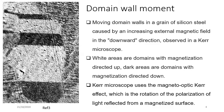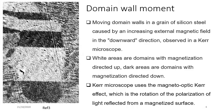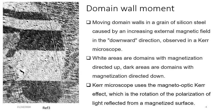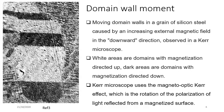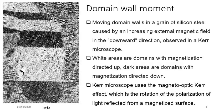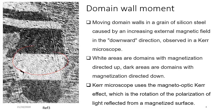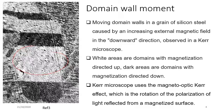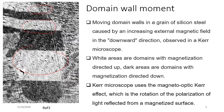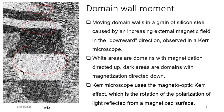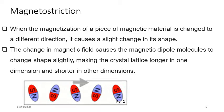The Kerr microscope uses the magneto-optical Kerr effect — the rotation of polarization of light reflected from a magnetized surface. Light areas are domains with magnetization directed up; dark areas are domains with magnetization directed down. When we apply and increase an external magnetic field, these domains gradually align in one direction and the whole region becomes magnetized uniformly.